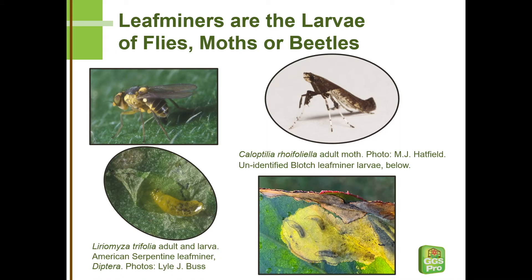Leafminers are the hatchlings of flies and moths and even a few beetles. These insects lay their eggs in the leaf tissue and the larva makes the mines that we see as a symptom on the outside of the leaf. On the left we see a common serpentine leafminer and its larvae shown there at the bottom — it's a fly larva. On the right is the moth species whose larvae formed the leaf blotches, and at the bottom we see an example of blotch leafminer larvae in action.